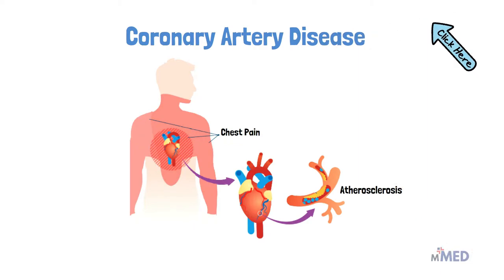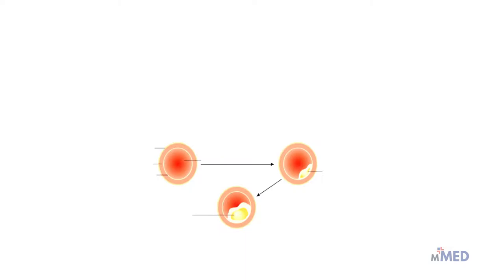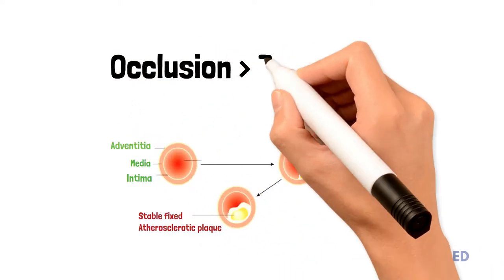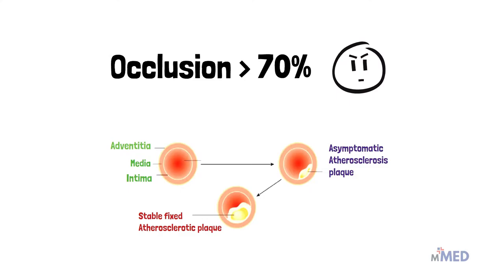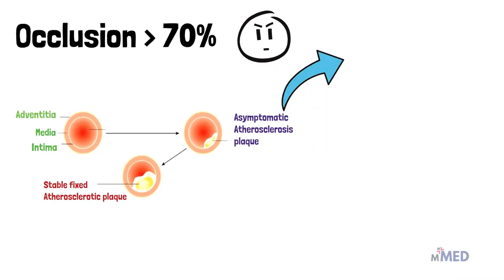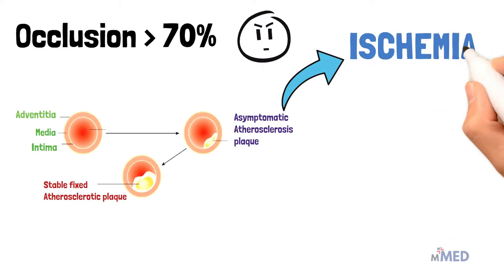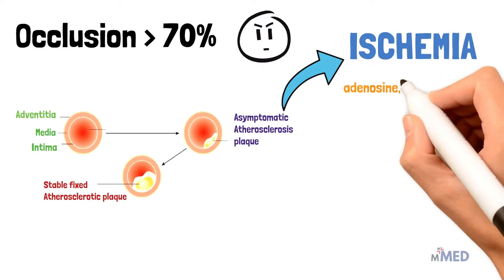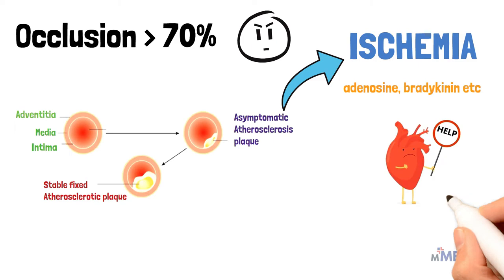If you haven't checked out our video on coronary atherosclerosis, please click here. Usually most of these lesions are asymptomatic, but when a lesion results in 70% stenosis it becomes clinically significant — meaning if it covers 70% of the lumen, that's when you start getting symptoms. This leads to myocardial ischemia and an ischemia-induced release of adenosine, bradykinin, and other molecules that stimulate the autonomic nerves, causing chest pain.